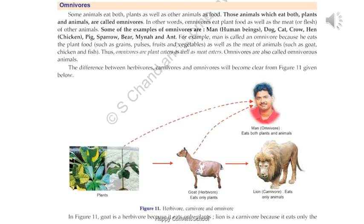Man is also included in this group — man is also an omnivore, because many people eat the flesh of other animals like mutton and chicken. Looking at figure 11, we see the relationship between herbivore, carnivore, and omnivore. Goat eats plants, making it a herbivore. Lion eats other animals like goat, making it a carnivore. Man eats both plants and animals, making man an omnivore. So here we conclude the chapter.